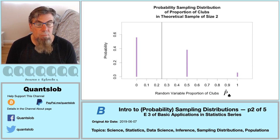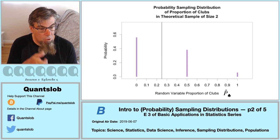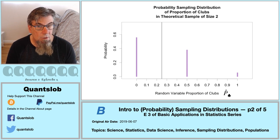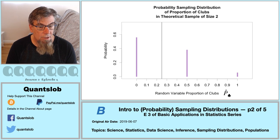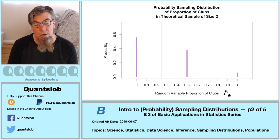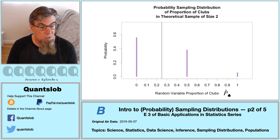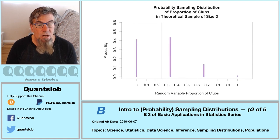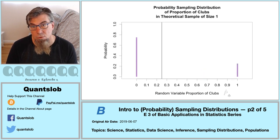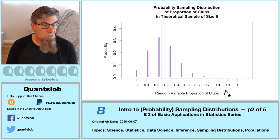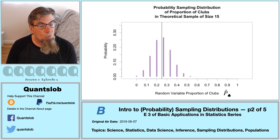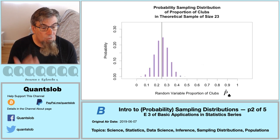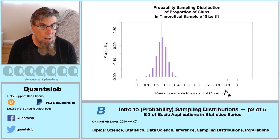Here is our probability sampling distribution of sample proportion of clubs in a theoretical sample of size two. Notice the vertical line on the plot, which marks a value of one-quarter — the population proportion of clubs. Right now, we're not concerned with how these sampling distributions are calculated; there's plenty of time for that later. We're looking for patterns — particularly how the shape and width of the sampling distribution change as the sample size increases.